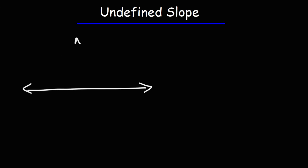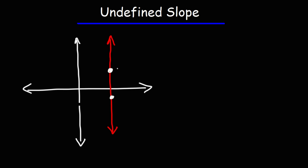So let's say we have a graph and we have a vertical line. Let's identify two points along this vertical line. Let's say the coordinate of this point is (3, -1), and for this one let's say it's (3, 2). Calculate the slope of the line using those two points.